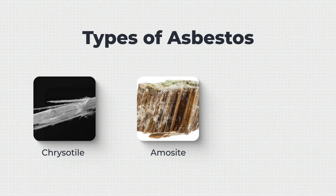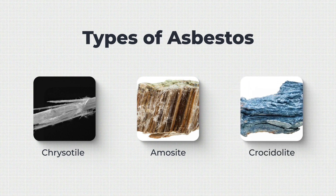Amosite, also known as brown asbestos, is more needle-like in its appearance and usually associated with lagging and insulation. Crocidolite, also known as blue asbestos, is a fluffier and softer form of the material, often used for coating rather than insulation. It should be noted that the colour of asbestos may not confirm which type it is, as it often takes on the surrounding colours from bonding and other nearby materials.